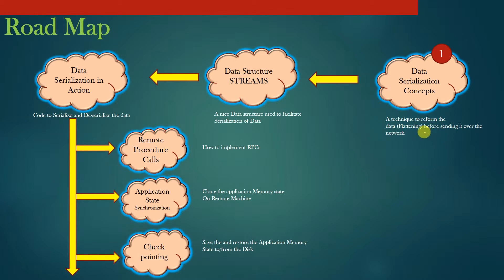In Module 1, you will learn the concepts regarding data serialization and data deserialization. Before sending data over the network, you need to perform data serialization. In Module 2, we will learn about a new data structure called streams. This data structure will allow you to facilitate serialization of data in a very easy and handy way.